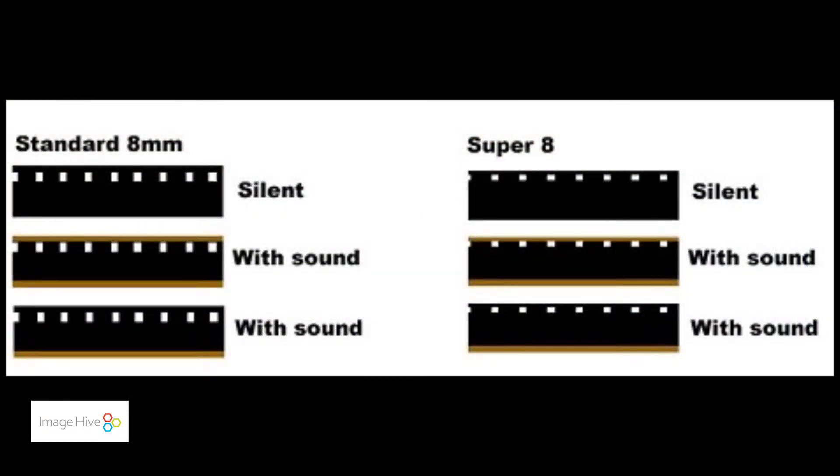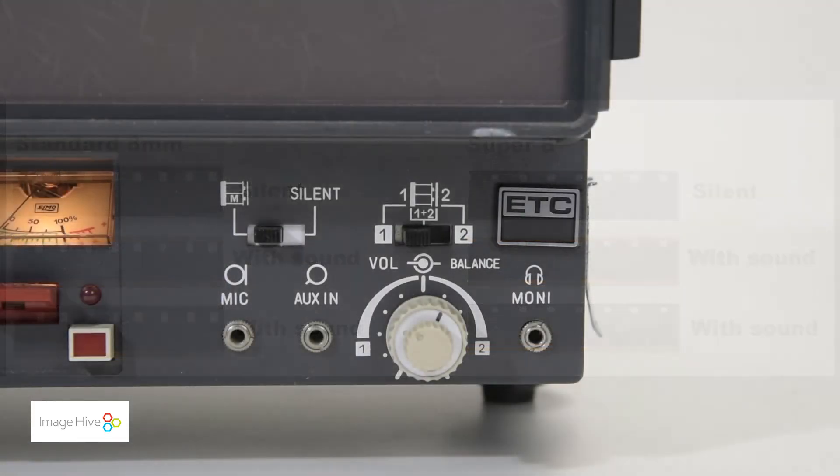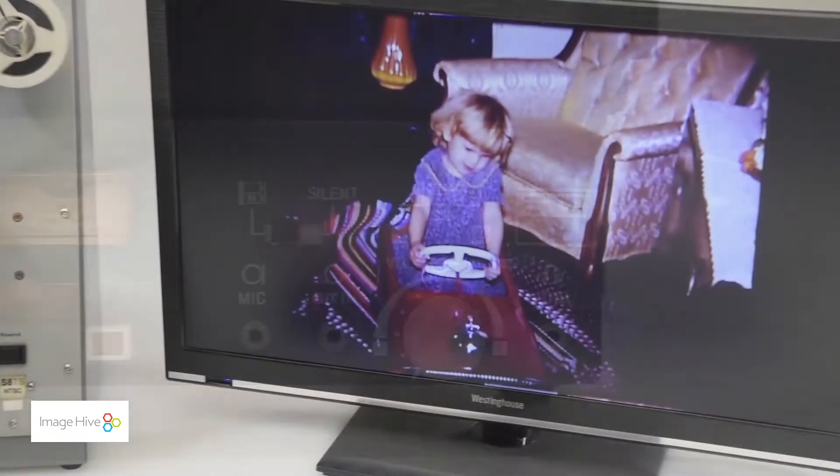If you want to see if any audio was recorded, you'll need to first check to see if the film has an audio track, which is determined by the audio strip on the side. If the strip is present, then you will need a machine that's capable of audio playback to see if there is any audio recorded.